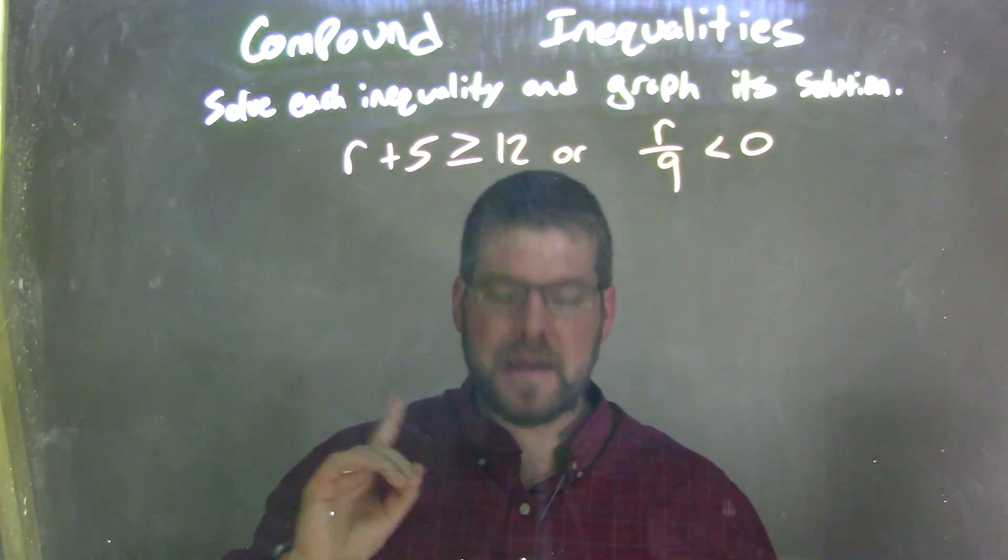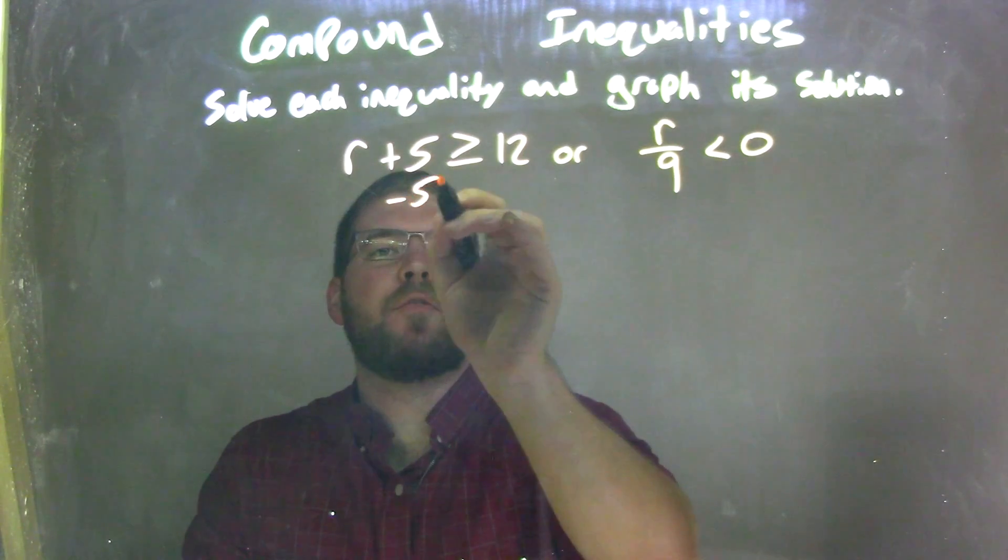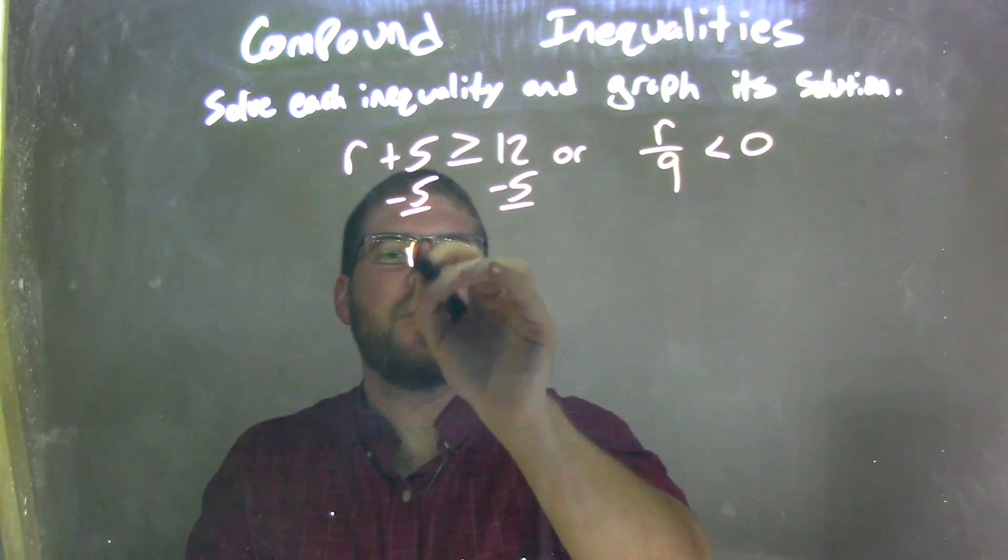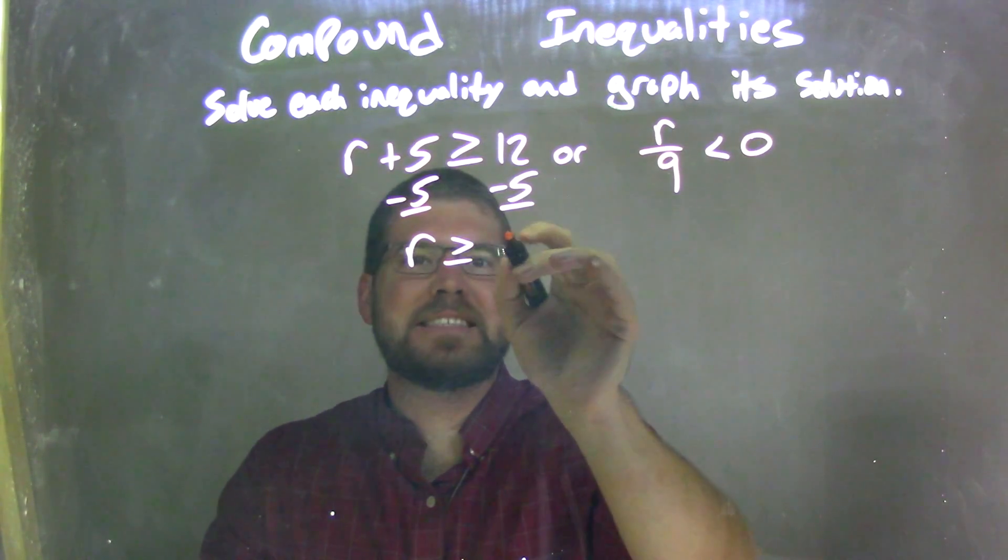Now we want to solve each inequality individually. I'm going to subtract 5 from both sides on this one, leaving me r by itself is greater than or equal to 12 minus 5, which is 7.